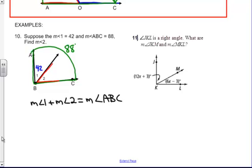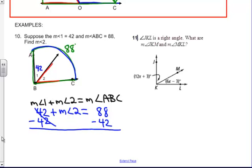So I'm going to substitute what I know. I know angle 1 is equal to 42 degrees plus the measure of angle 2, I don't know what that is, is equal to the measure of ABC, which is 88 degrees. And I'm just going to use the algebra to finish solving this equation. The measure of angle 2 is equal to 46 degrees, and I have my answer.